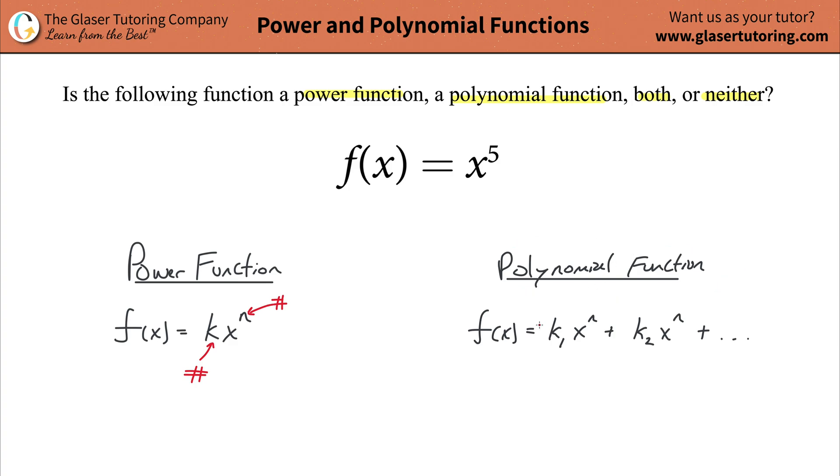A polynomial function has a very similar general form. I like to use k's here; in some textbooks they use a's. Basically, a polynomial function is a function that equals any number of terms—you could have one, you could have